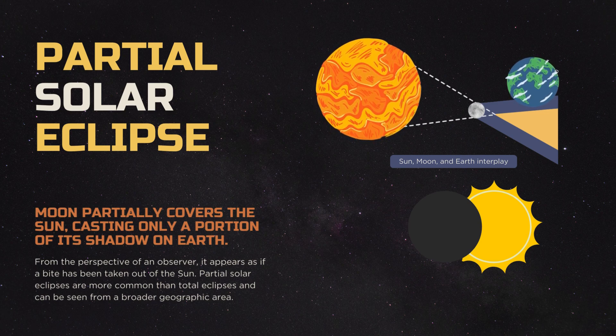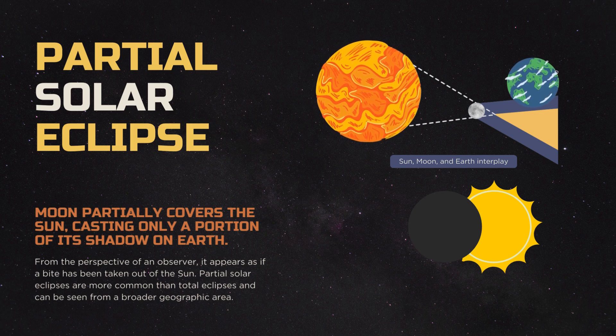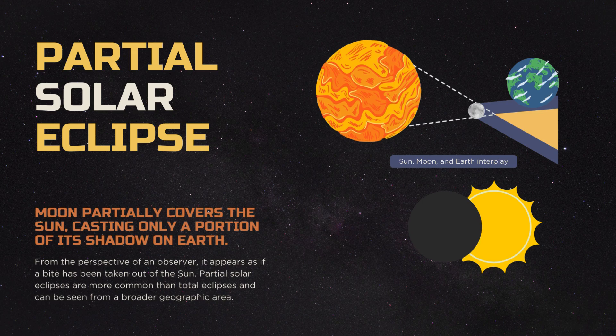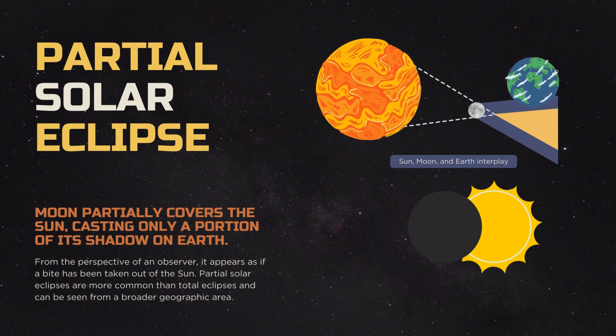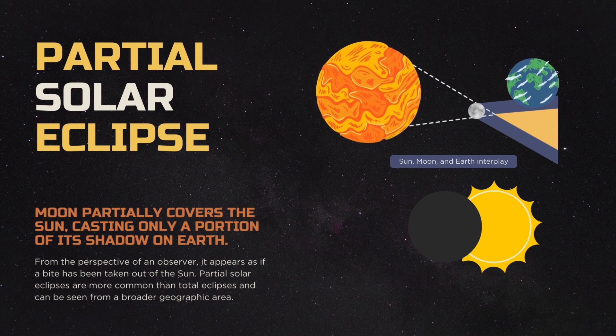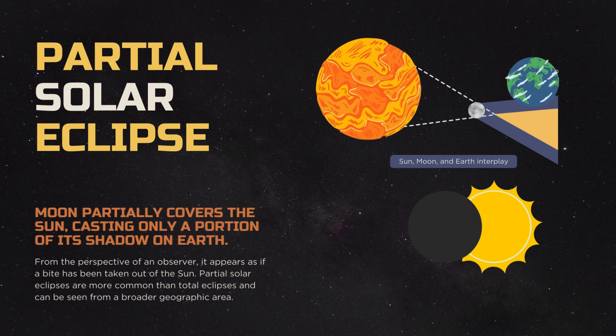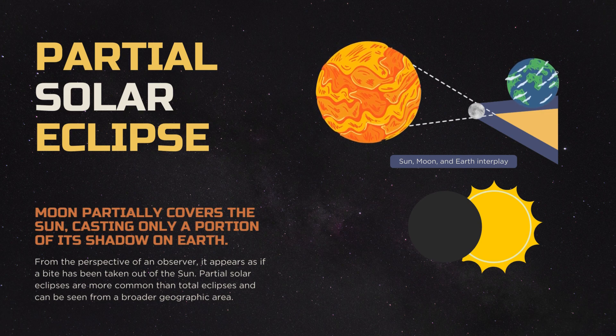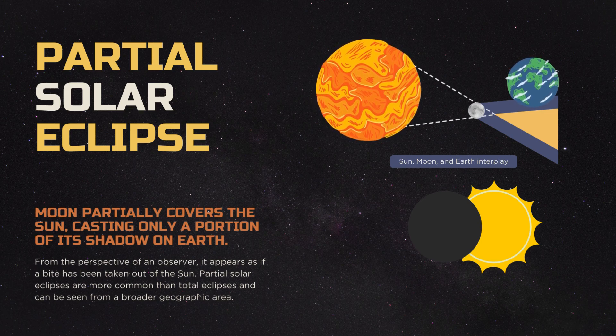So now today we will talk about what is a partial solar eclipse. Partial solar eclipse, as seen in this picture, this is what we see from the earth. The moon partially covers the sun, casting only a portion of its shadow on earth. From the perspective of an observer, it appears as if a bite has been taken out of the sun. Partial solar eclipses are more common than total solar eclipses and can be seen from a broader geographic area.